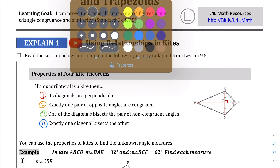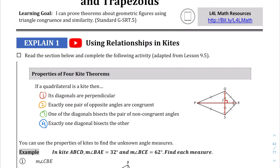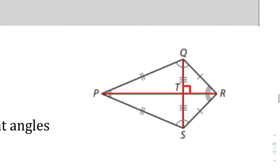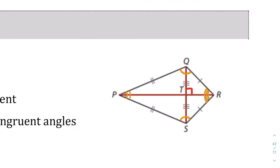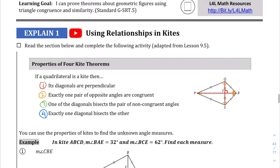Let's move on to the second part of this theorem — exactly one pair of opposite angles are congruent. So if we were to take a look at the opposite angles, we see this angle R here. This is different from this angle here, but you have this being similar to that. So exactly one pair of opposite angles are congruent.